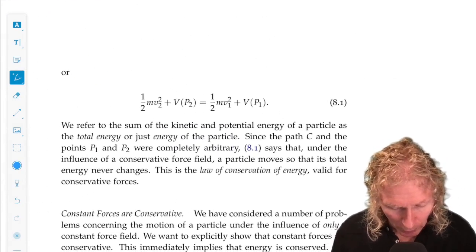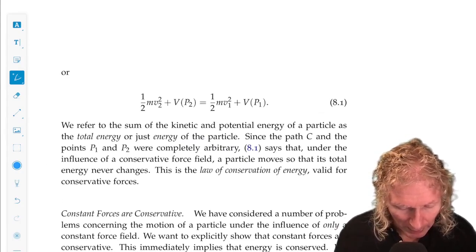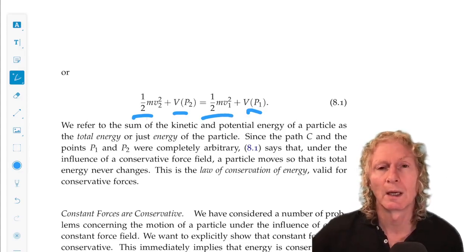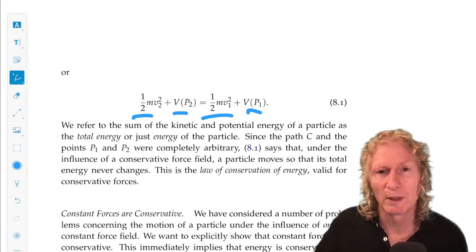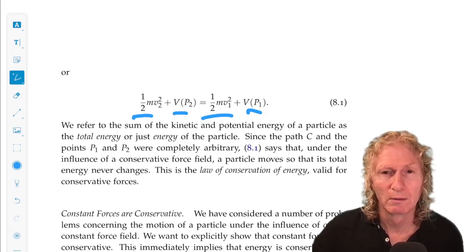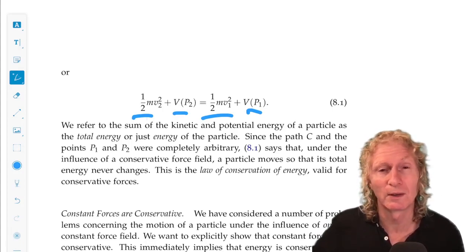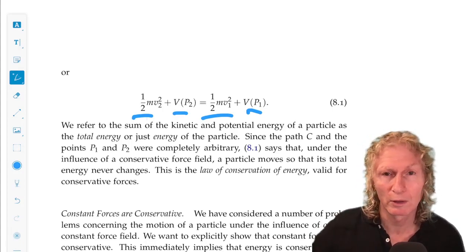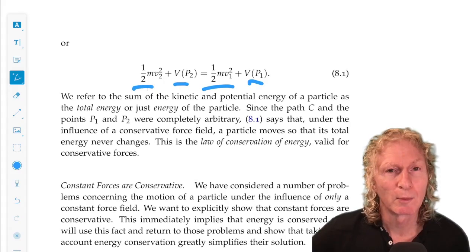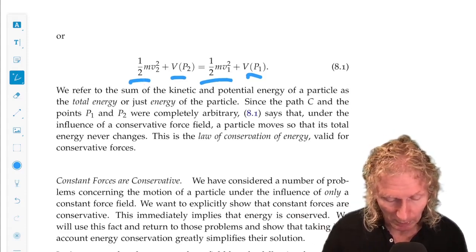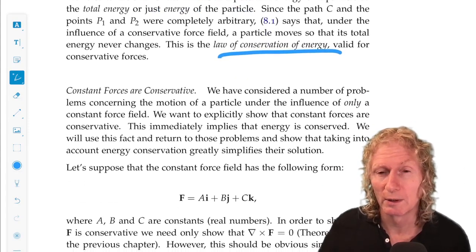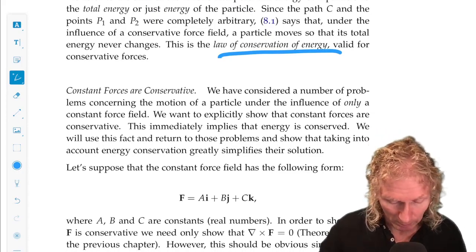In rearranging the terms, we have the total energy, which is kinetic plus potential energy at P2, is equal to the total energy at P1. Now P1 and P2 are arbitrary. So at any point along the path, the total energy should not change. It should be constant. And this is what we mean by energy is conserved. All along the path, at any point we pick and compute the energy, the total energy, kinetic plus potential, we get the same number. This is often referred to as the law of conservation of energy.